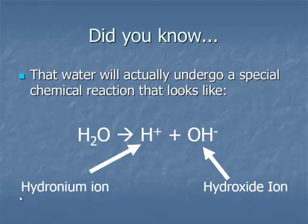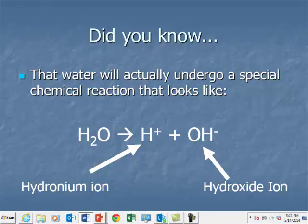What you may or may not know is that water will actually undergo a very special chemical reaction that looks like this: H2O → H+ + OH-. Water will self-ionize naturally without any outside interference. The self-ionization of water creates two ions: the H+ ion (hydronium ion) and the OH- hydroxide ion. Every time you make an H+ ion, you also make an OH- ion.